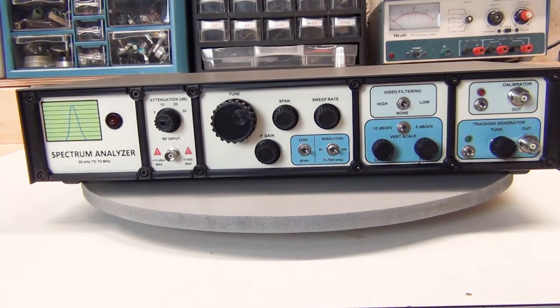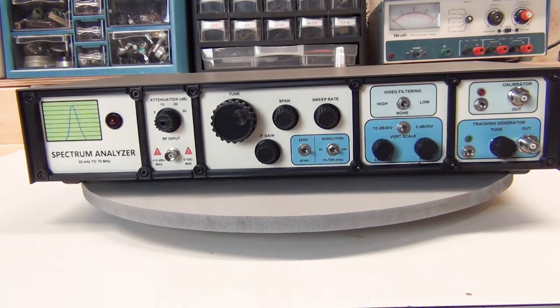And then finally, over on the right are the two additional features that the spectrum analyzer design has. There's the calibrator that you can turn on that has a reference signal every 10 megahertz. And then here's the tracking generator. And there is a fine-tuned control that you can adjust to set the tracking frequency a little more accurately.